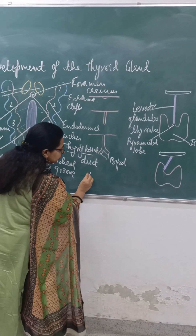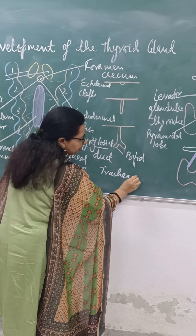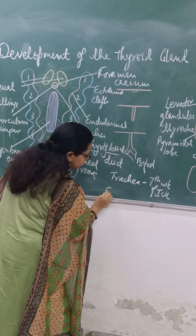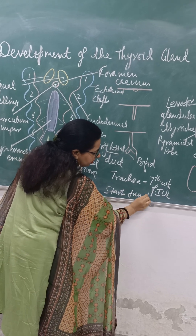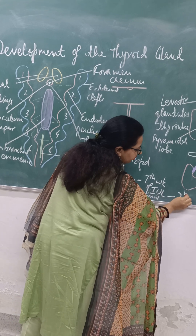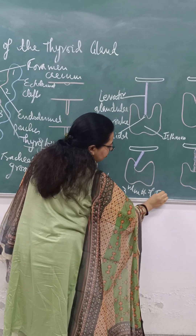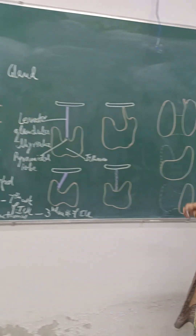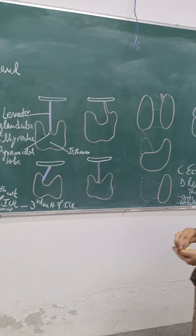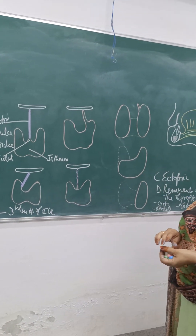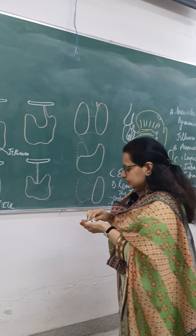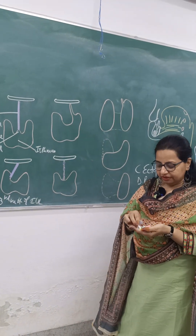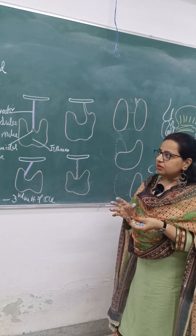The thyroid gland reaches its position in front of the trachea in the 7th week of intrauterine life, and starts functioning in the 3rd month of intrauterine life. The thyroglossal duct forms the thyroid gland, and the two lobes along with the isthmus — the connecting link between the two lobes — are formed because of this bifid structure. This is the normal pattern of growth.